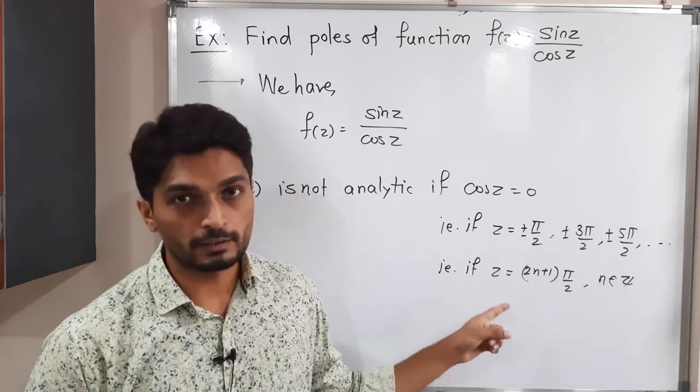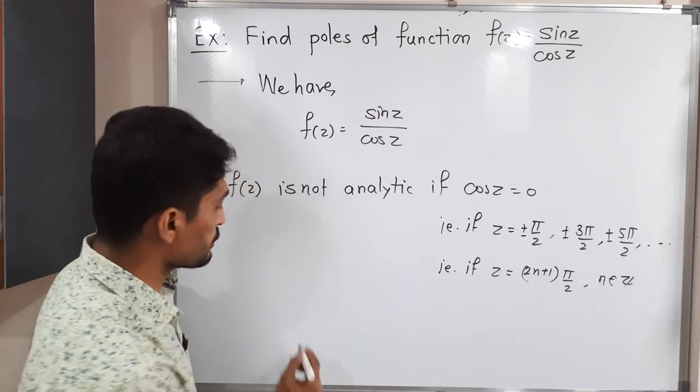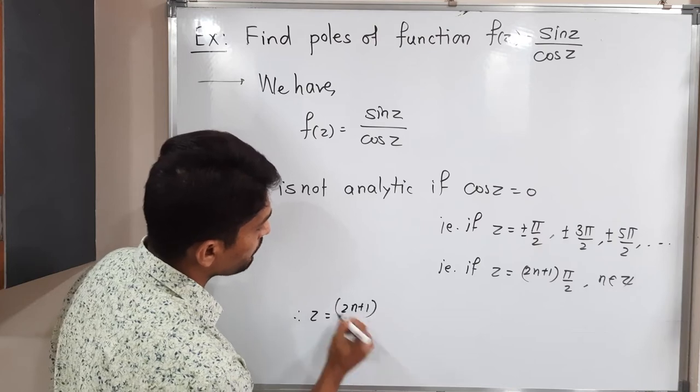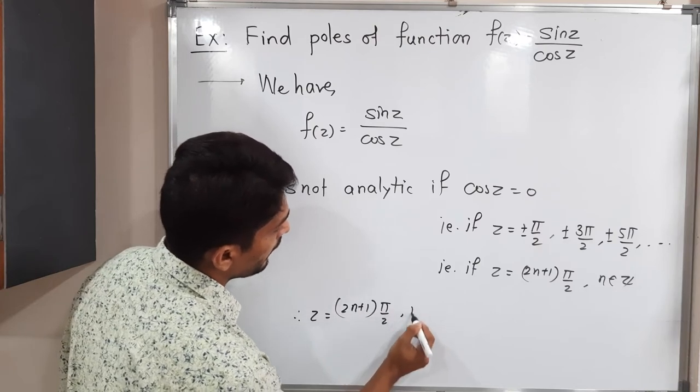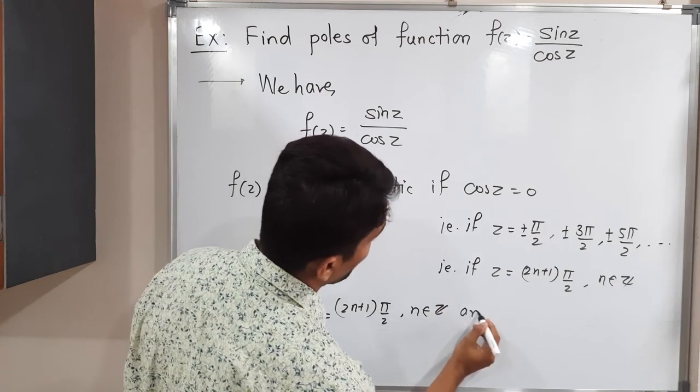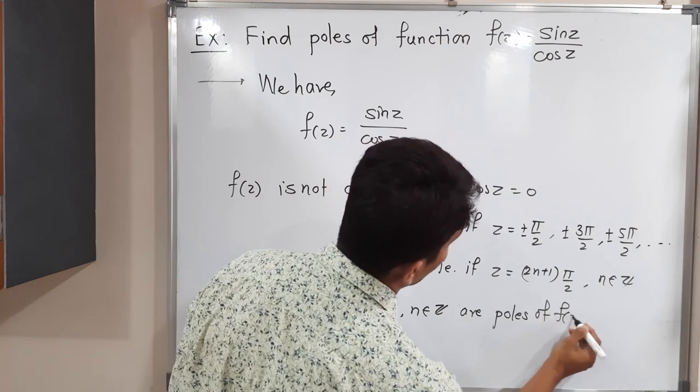At these points of z, the function is not analytic. So these are poles. Therefore, z equals (2n+1) times π/2, where n belongs to the set of integers, are poles of f(z).